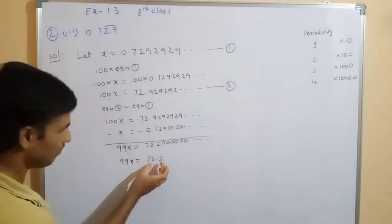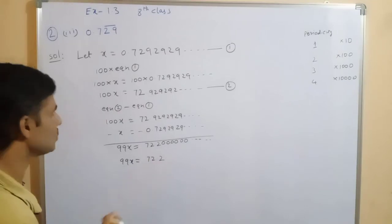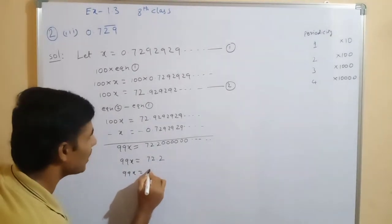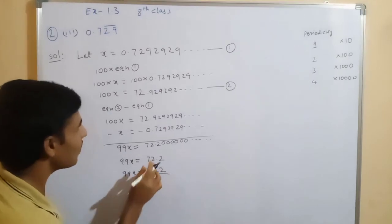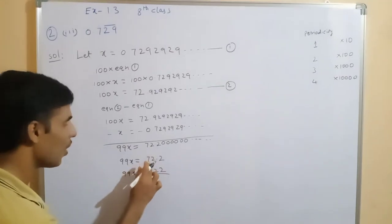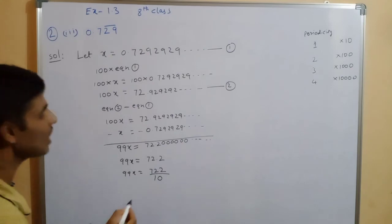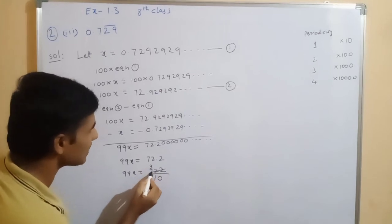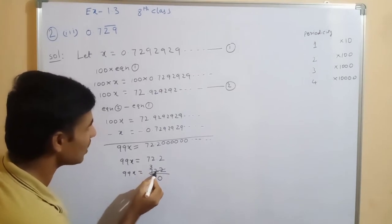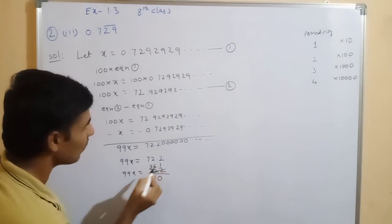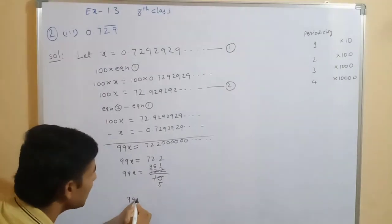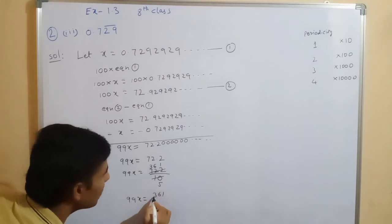Now, 99x equals 72.2. To write this in P by Q form, target the decimal point. 72.2 means 722 divided by 10. Simplifying: both are divisible — after working through the division steps, we get 99x equals 361 divided by 5.